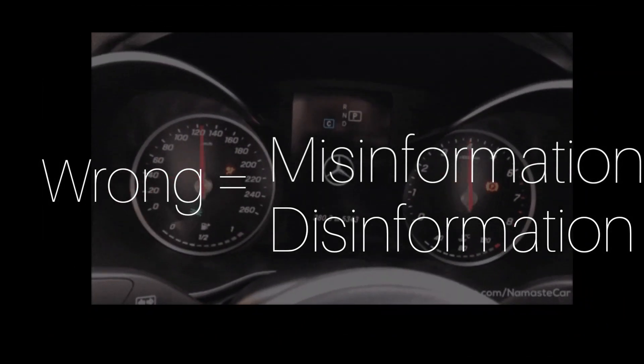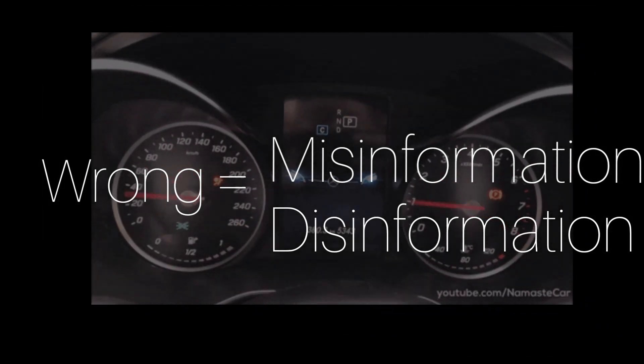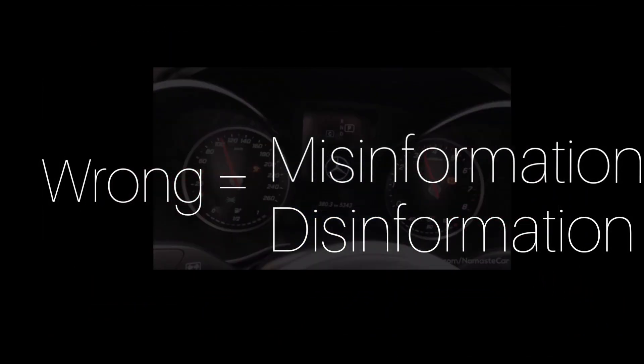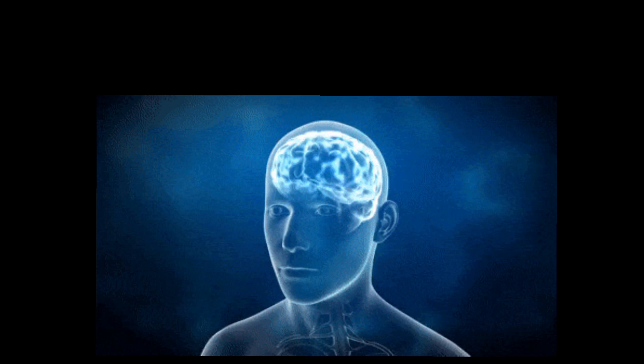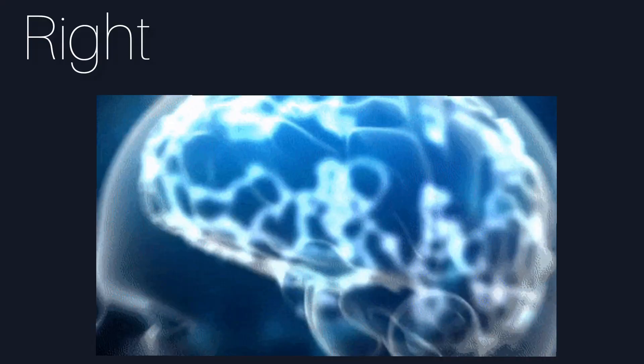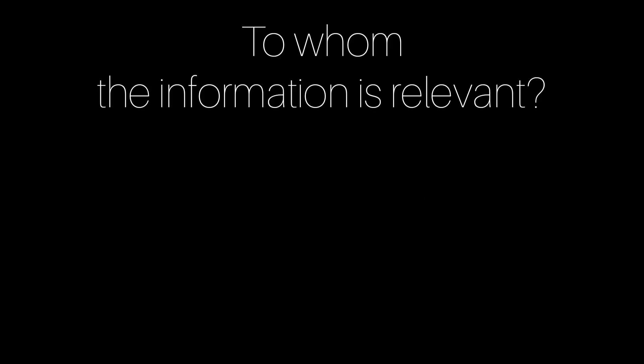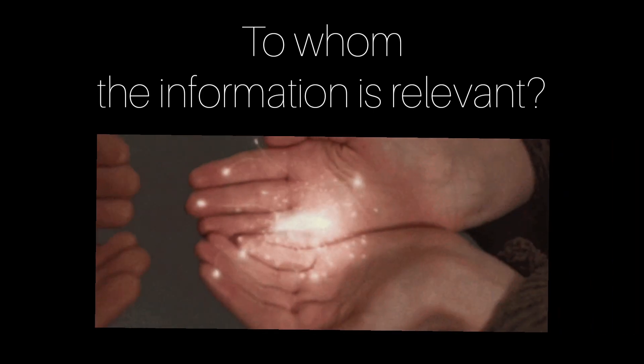Wrong information is more fun to share and travels really fast. But the question is, how do people decide whether it is right or wrong information? And when the decision is made, how do people decide to whom the information is relevant?